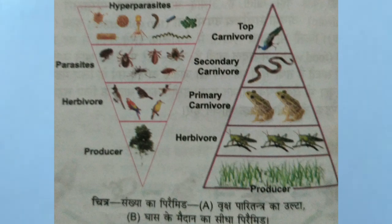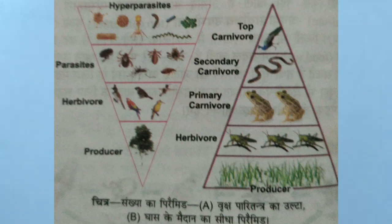Pyramid of Numbers — in this pyramid, the number of organisms at different trophic levels is represented. The inverted pyramid for a tree/forest ecosystem and the upright pyramid for a grassland ecosystem are both important.